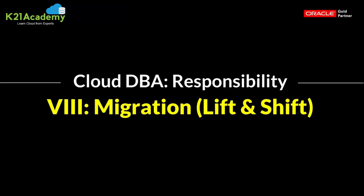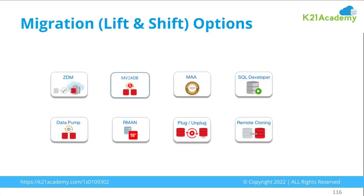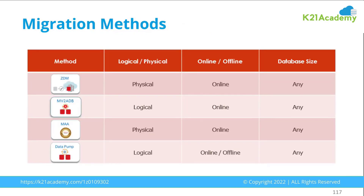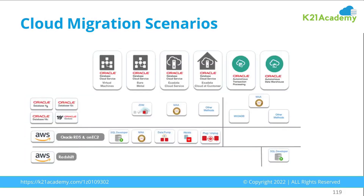The eighth and most important task — one that can earn you a lot of money — is migration or lift and shift: the process of migrating databases from on-premise to cloud. Oracle provides many options depending on the source database type and your target — user-managed or autonomous databases. Options include ZDM (Zero Downtime Migration), Move to ADB, SQL Developer, Data Pump, RMAN, plug and unplug, and remote cloning. Depending on whether you need physical or logical migration, online or offline migration, or the size of the database, you should be familiar with the relevant migration scenarios.